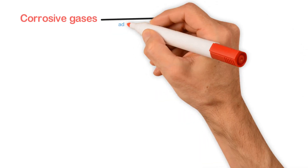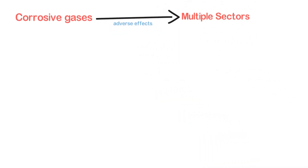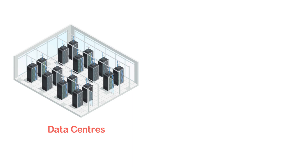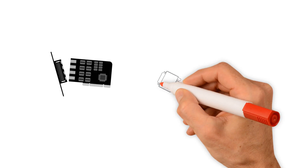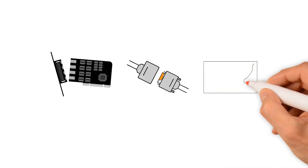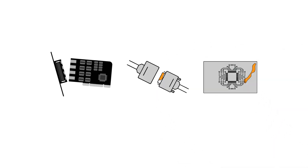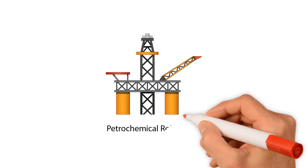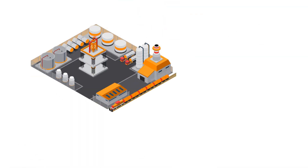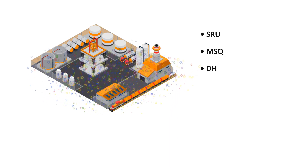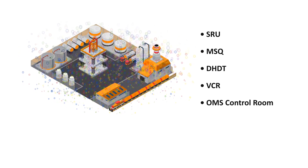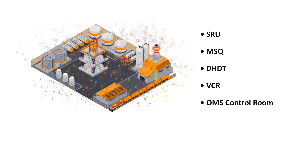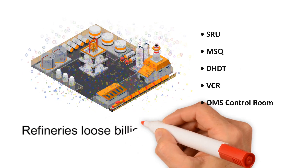Corrosive gases lead to several adverse effects in multiple sectors. For example, in data centers and server rooms, frequent breakdown of server cards, corrosion of connectors and creep corrosion on PCBs are prominently seen. In petrochemical plants and refineries, breakdown in several areas like SRU, MSQ, DHDT, VCR, OMS control rooms and other areas due to a profoundly corrosive environment is a regular occurrence.